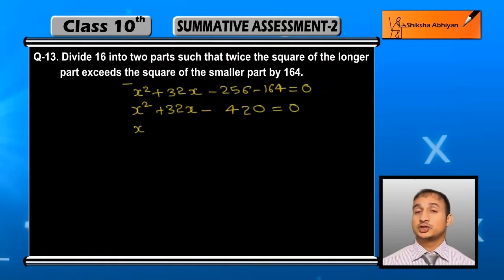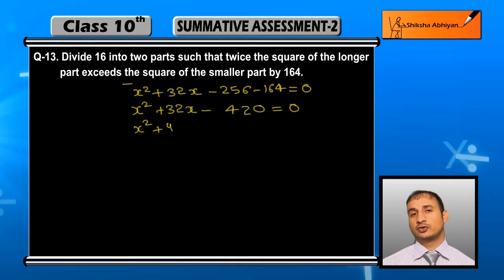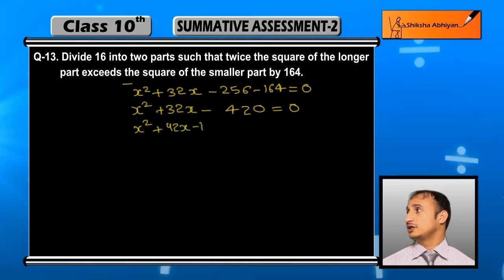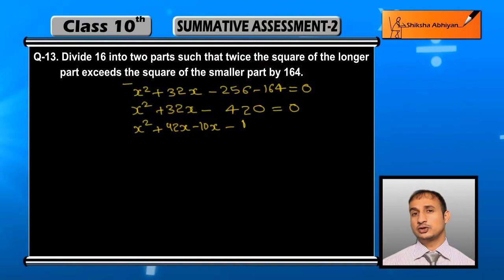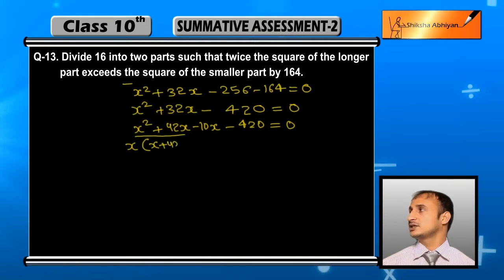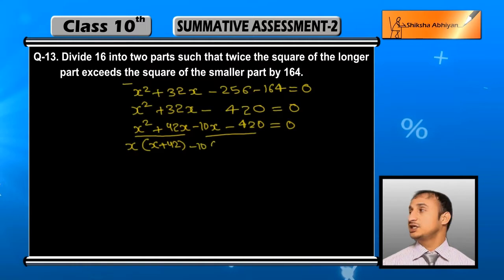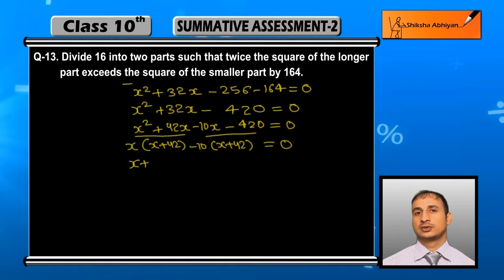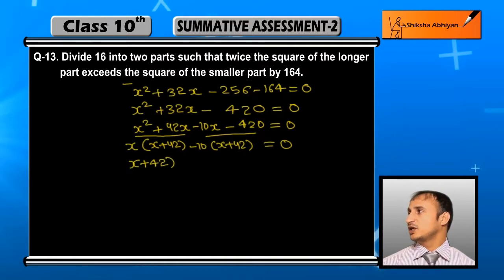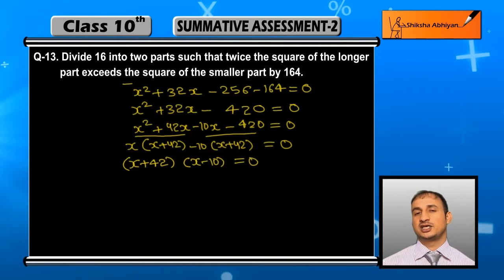420 के ऐसे factors जो 32 का difference दें — 42 × 10 = 420, और 42 − 10 = 32. So मैं 32x को लिखूँगा 42x − 10x. अब x common लेने पर x(x + 42), और last two terms से −10 common लेने पर −10(x + 42) = 0. So (x + 42)(x − 10) = 0.